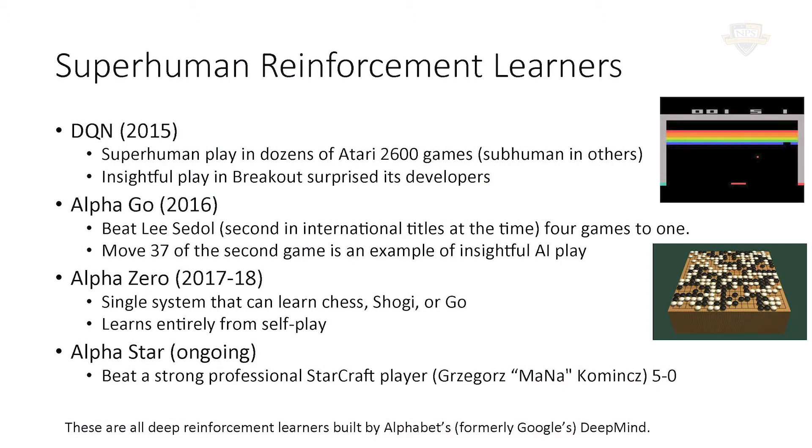Then, just one year later — they're pretty productive over there in England — there was AlphaGo. There's a documentary on Netflix if you can find it. It captures the whole saga of them trying to build a system to become a world-class Go player for the first time, since Go is generally acknowledged to be a much more difficult game than chess, at least for the computer. Eventually they came up with this AlphaGo system that managed to beat Isedol — one of the small handful of ultra-elite players — four games to one, which was pretty impressive.